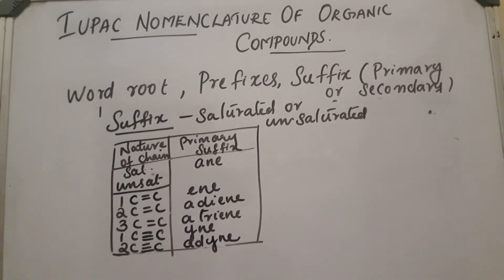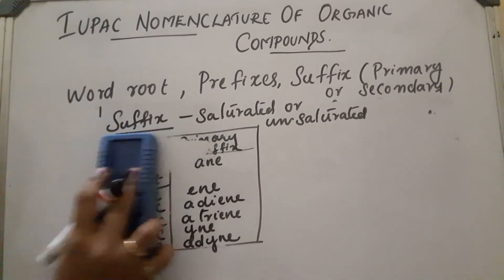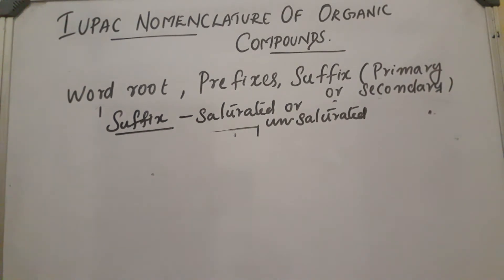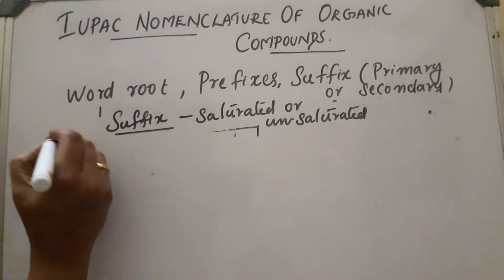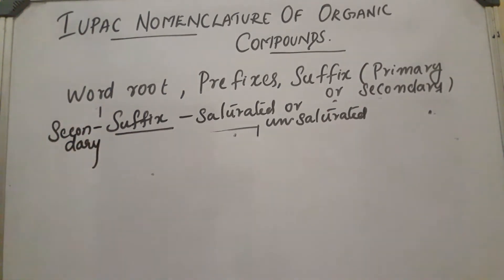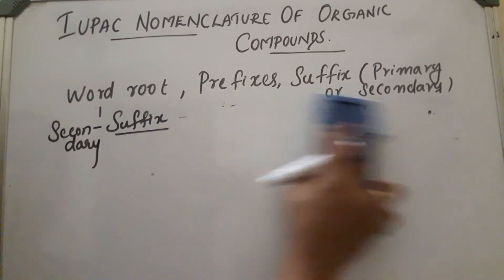These are the primary suffixes. There are two types of suffixes: primary suffixes and secondary suffixes. Primary suffixes denote the saturation or unsaturation of the compound. The secondary suffix indicates the functional group present in the molecule.